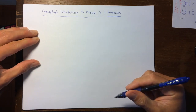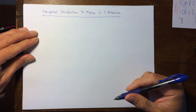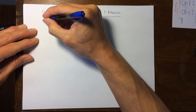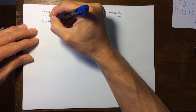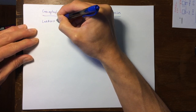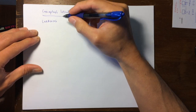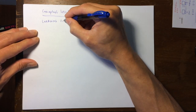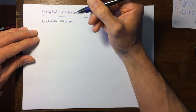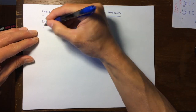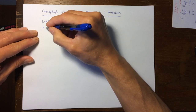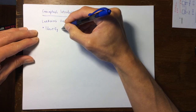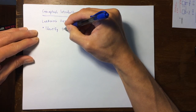This is a conceptual introduction to motion in one dimension. There are three learning outcomes so that you have goals for what you're supposed to gain from watching this video. The first one is to be able to identify and describe the instantaneous motion.